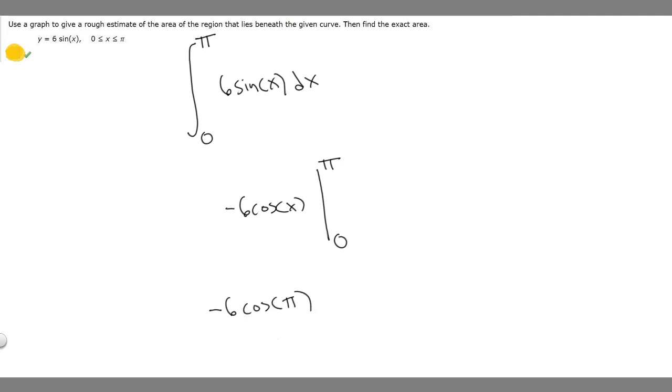The cosine of pi is going to be minus 1. So it's going to become minus 6 times minus 1, which equals 6. So we're going to take our 6 and write it right here.